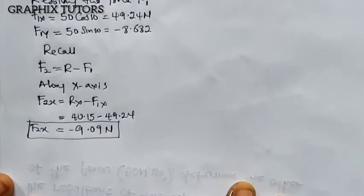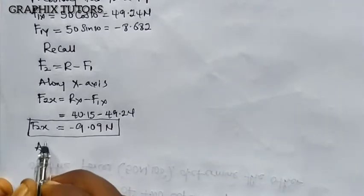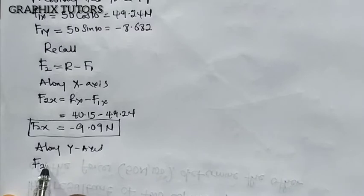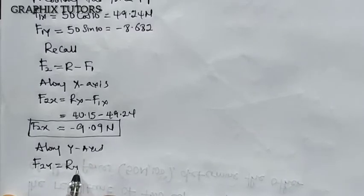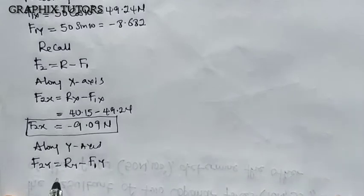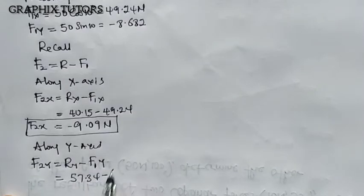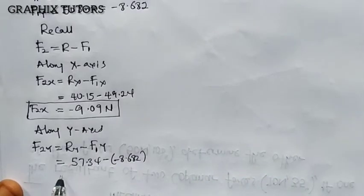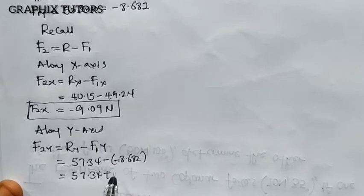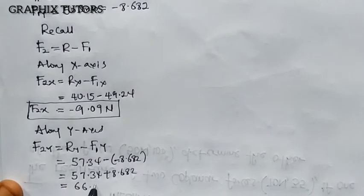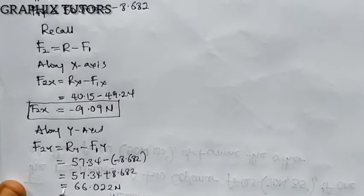Similarly, along the y-axis, F2y equals Ry minus F1y, which gives us 57.34 minus (minus 8.682). Since minus minus is plus, this becomes 57.34 plus 8.682, which equals 66.022 newton.